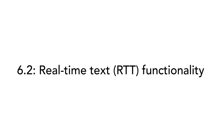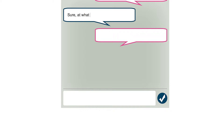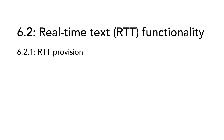6.2 covers real-time text functionality, or RTT. This is like a text message in which users do not have to hit the enter or return key to send a message. This solution is not yet deployed on a larger scale. The first heading of this subsection has to do with RTT provision: when the ICT provides two-way voice communication, the user must also be able to use real-time text instead. The possibility to use RTT can be provided by default or added later, and it might be necessary to add hardware or software, which can be added separately or together.